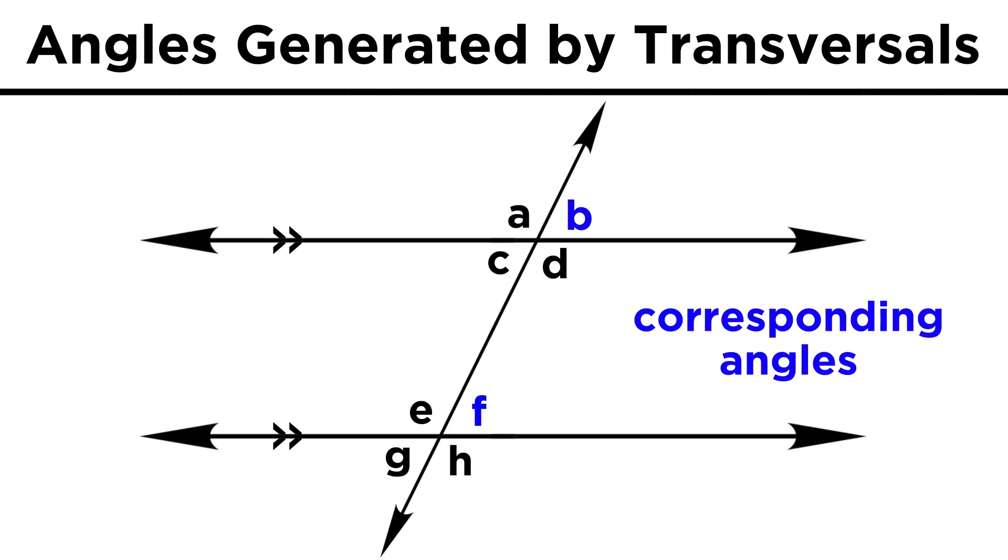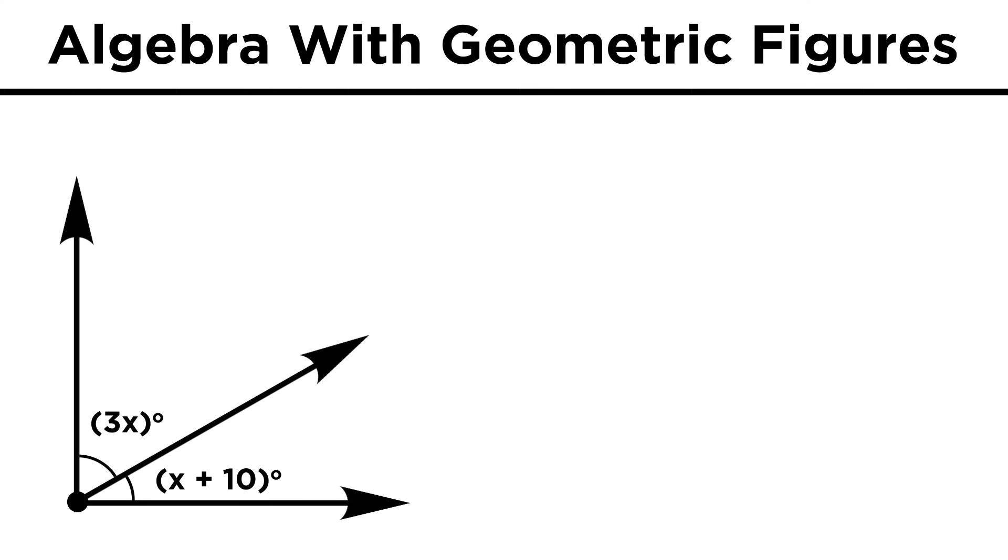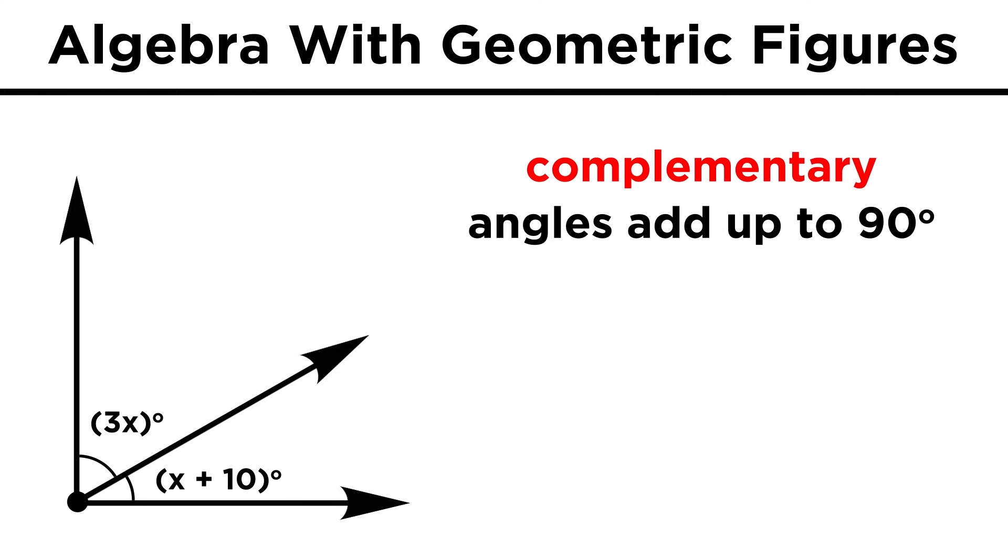Lastly, angles in the same position with respect to one another are called corresponding angles. We will see diagrams like this quite a lot in geometry, and we may even have to do algebra with them. Like if we set these complementary angles equal to 3x and x plus 10. How do we find the measure of these angles?